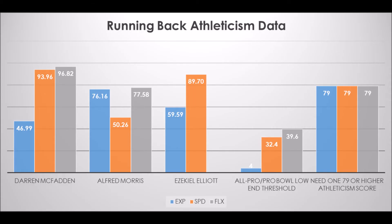Alfred Morris had a 76.16 explosive lower body strength score, a 50.26 speed score, and a 77.58 flexibility score. You might look at that and think that's not amazing — which it isn't particularly amazing. However, it is all above average for the most part in terms of explosiveness and flexibility. His speed score isn't amazing, but it is at least average speed for a back his size. He's obviously someone who has had success in the past, which we'll get to.